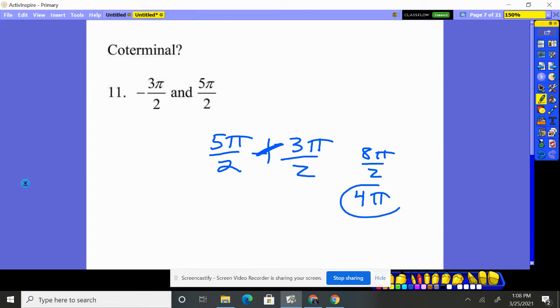8 divided by 2 is 4. Yes, they differ by two rotations around. They differ by a multiple of 2π, two things of 2π. So yes, those guys are coterminal. They're pointing in the exact same location.